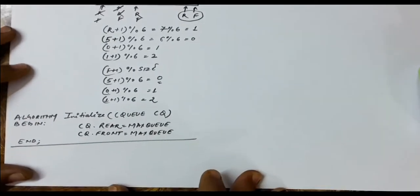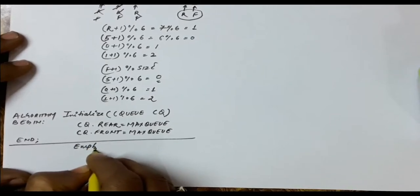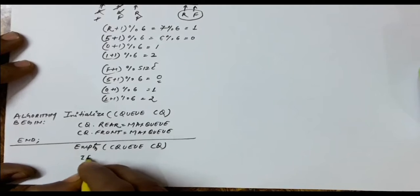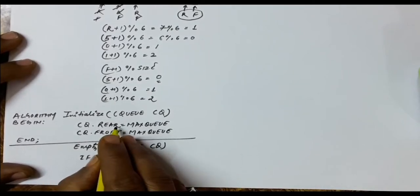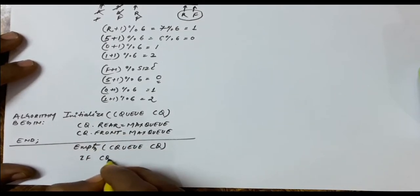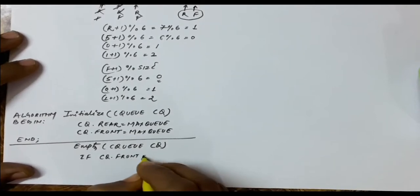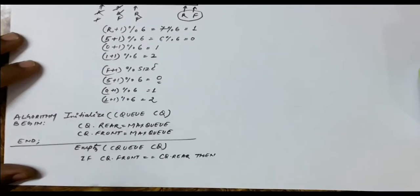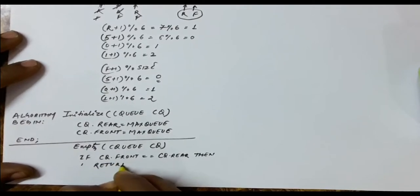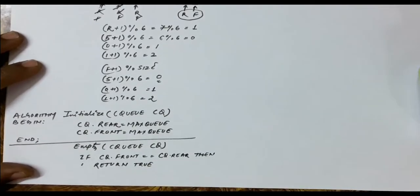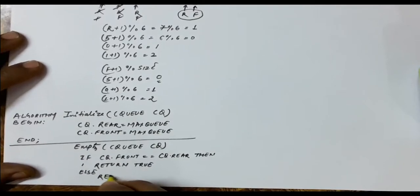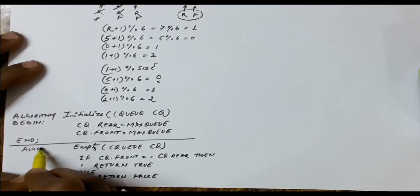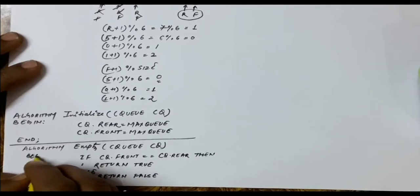Similarly we can design another operation which is the empty operation. Empty means we just have to check if the given queue is empty or not. We have a function empty, and in this empty we will check if the queue is empty. It can be checked by seeing if front and rear are equal. If front and rear positions are the same, this queue will be empty. So if q.front is equal to q.rear, obviously this queue is empty. Since empty is a boolean value function, it will return true when front and rear are at the same position, otherwise it will return false indicating that the queue is not empty.